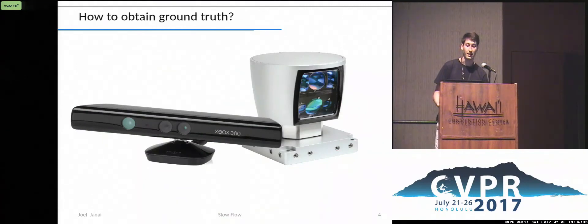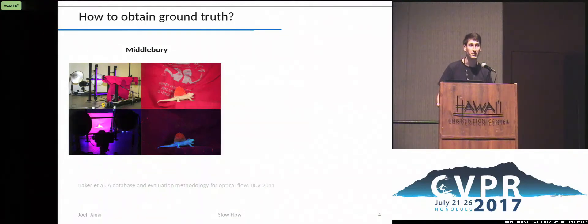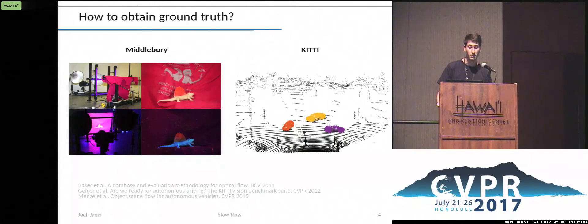Whereas other tasks have sensors to record the ground truth directly, like the Kinect or Velodyne for 3D reconstruction, there is no such sensor for optical flow. Middlebury used fluorescent ink with UV light to track pixels. The setup is very time consuming, and it takes a couple of days to record only one image pair. KITTI used laser scans and CAD models of cars to generate sparse ground truth, but for the alignment of the CAD models, annotations are necessary. Unfortunately, these approaches do not scale up to large datasets.